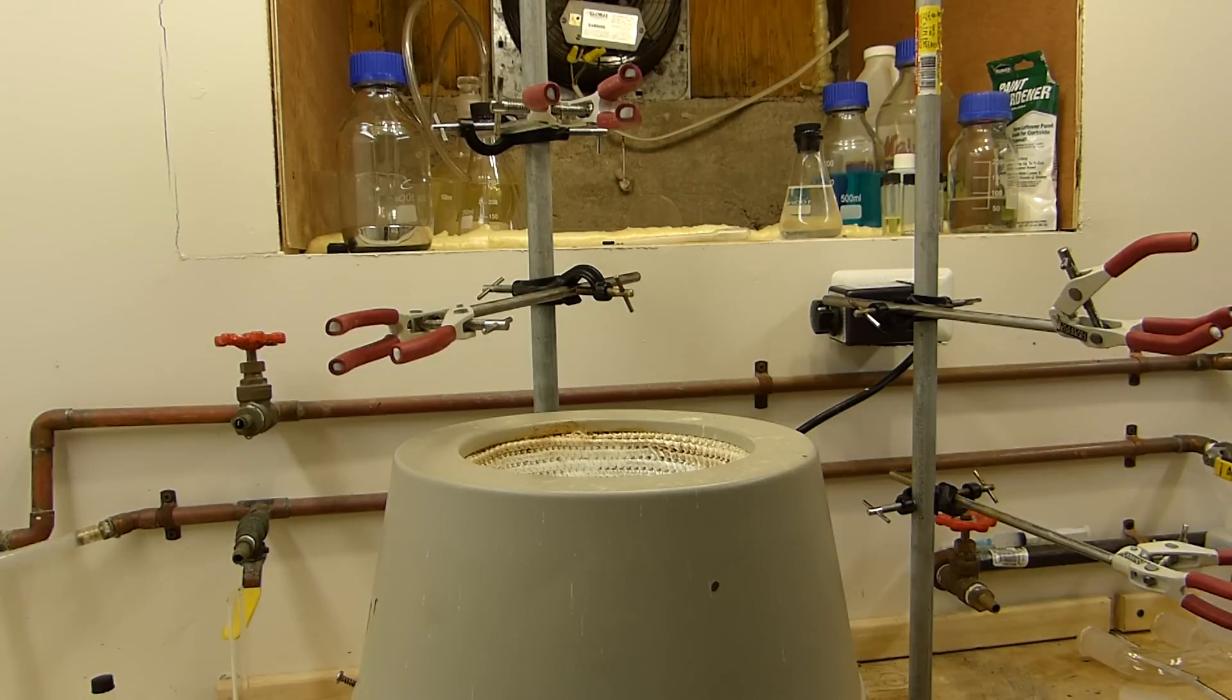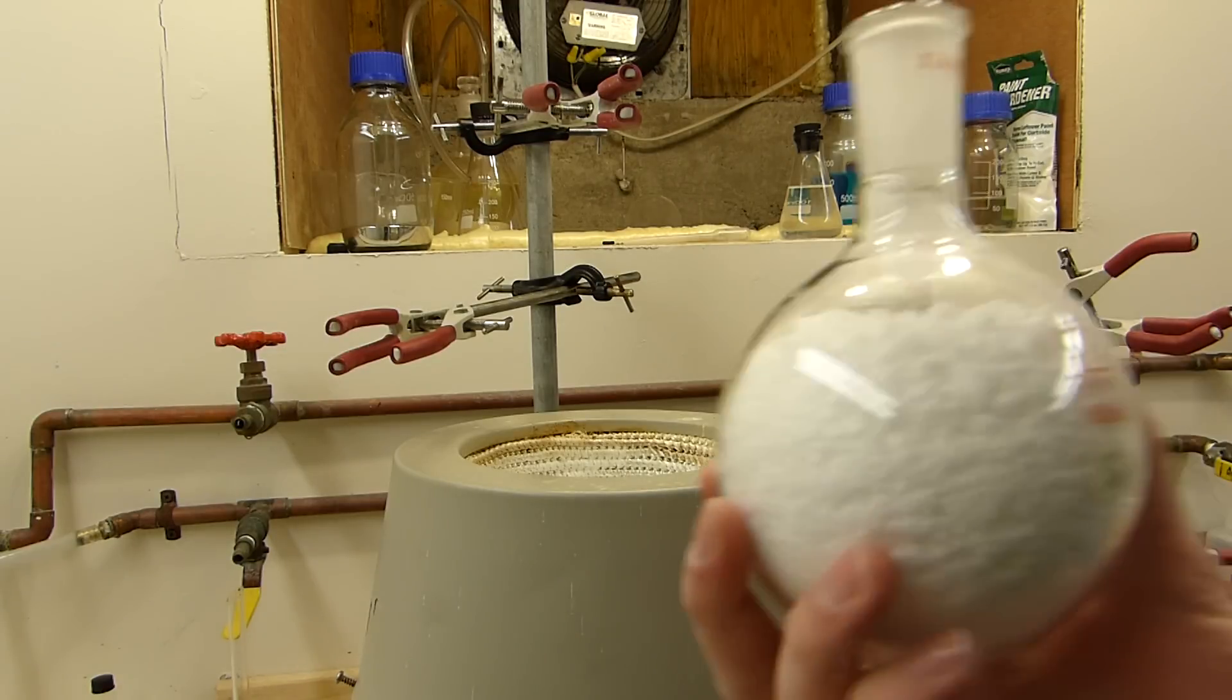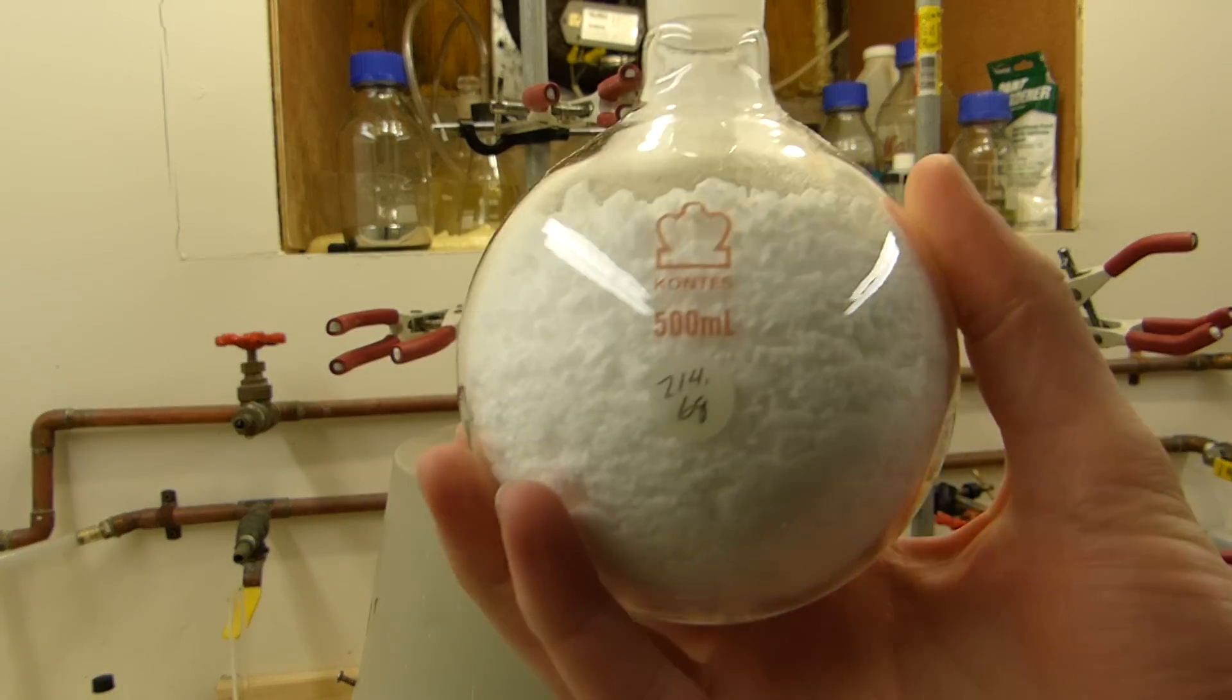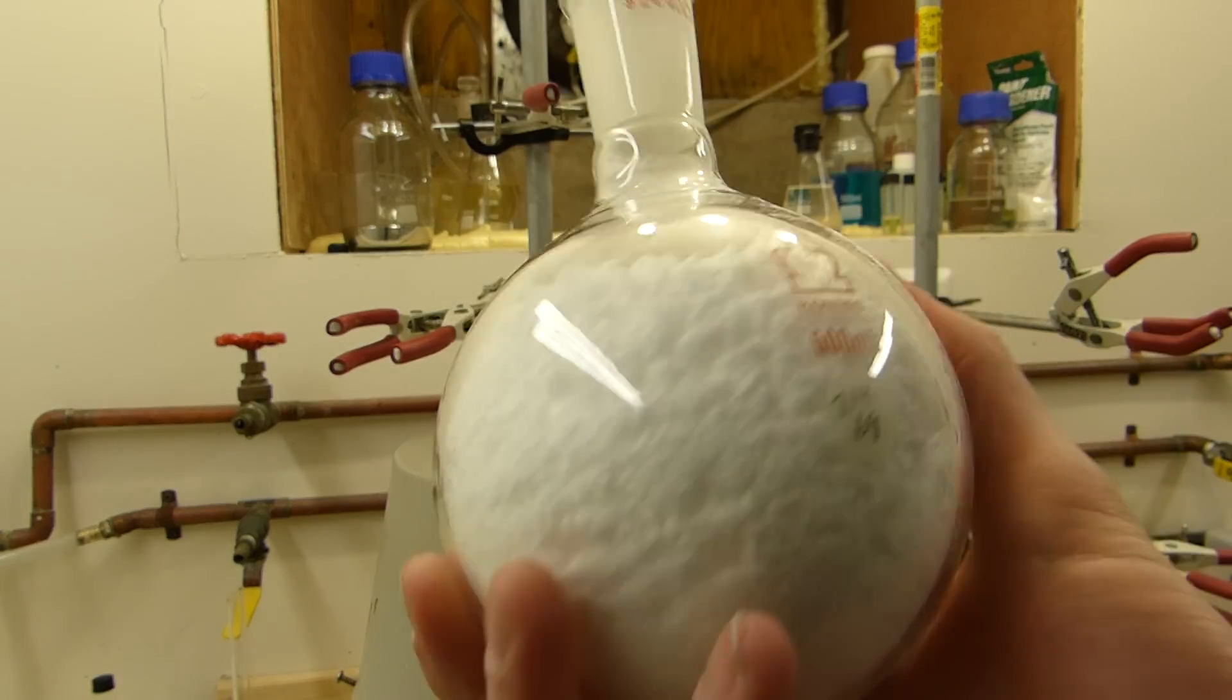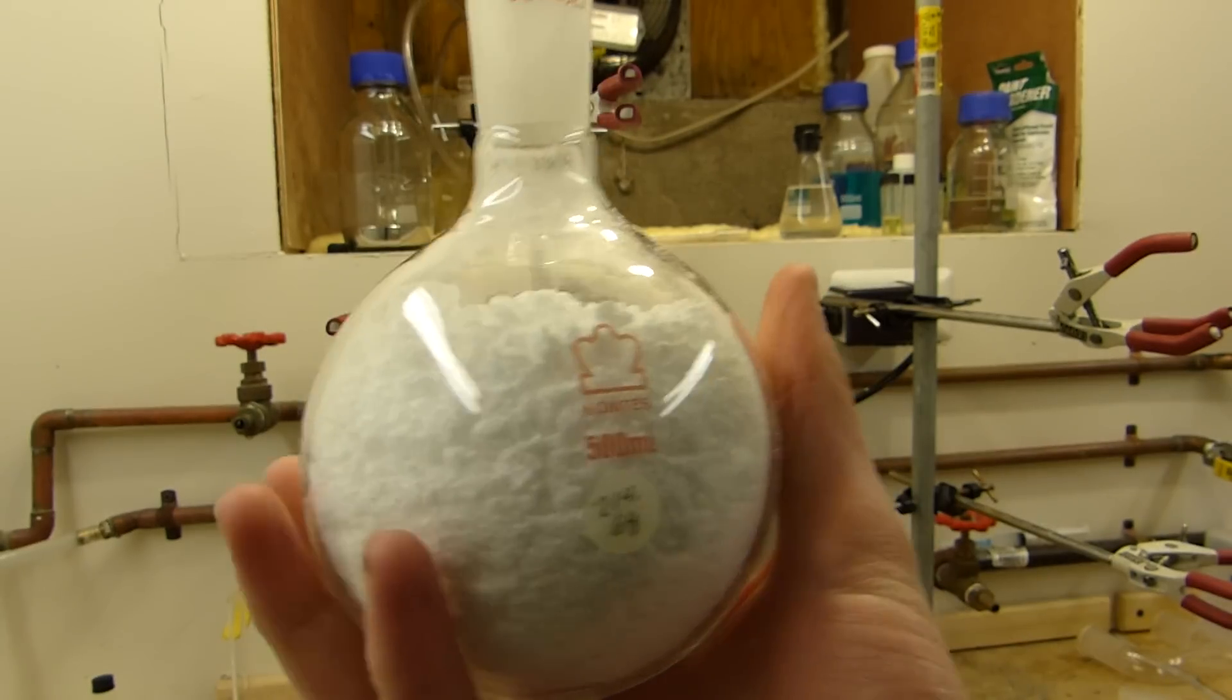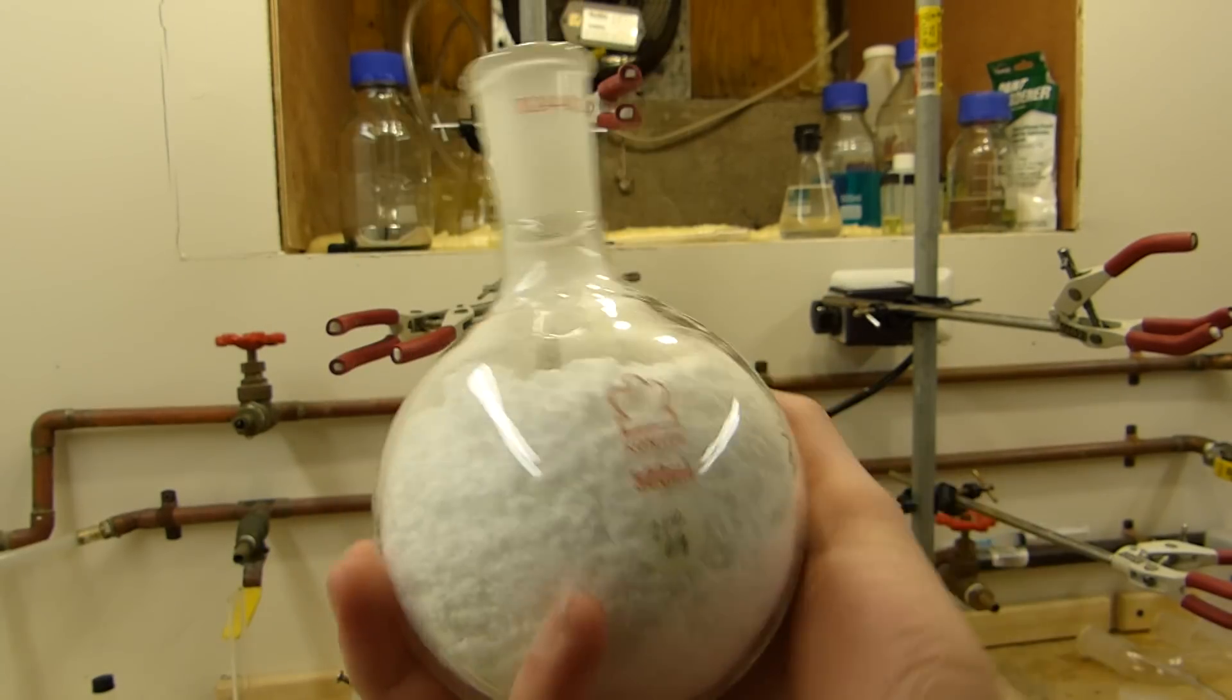I'm running this on a 2 molar scale, so I need to place 164 grams of anhydrous sodium acetate into a round bottom flask. This flask here looks very, very full, and that's just because the sodium acetate is very fluffy. Once the sulfuric acid is added, this packs down to a little over halfway, which is about a safe point for a 500 milliliter round bottom flask, or any round bottom flask for that matter.